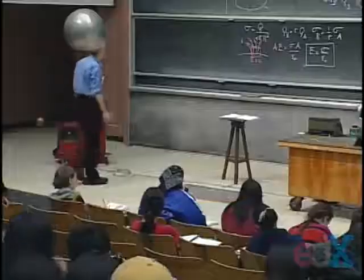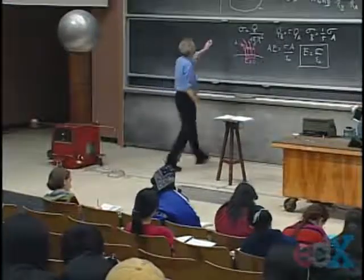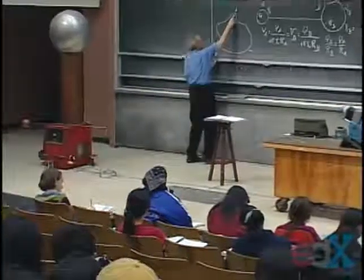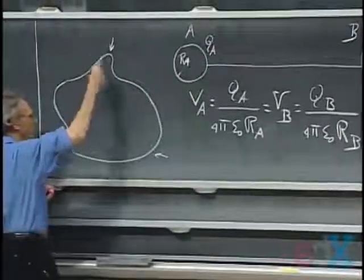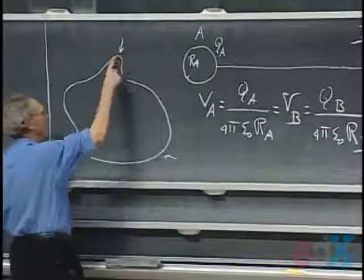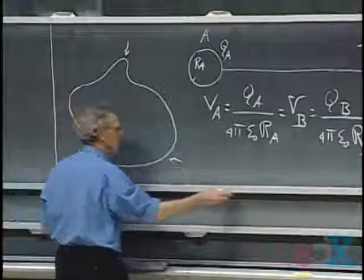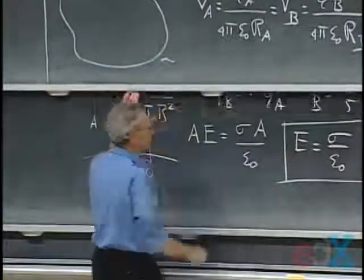Since the surface charge density is going to be the highest here, even though the whole thing is at equipotential, the electric field will also be higher here than there.